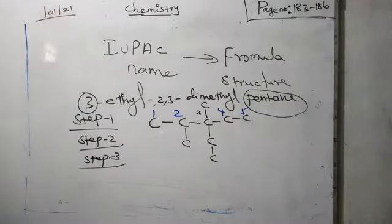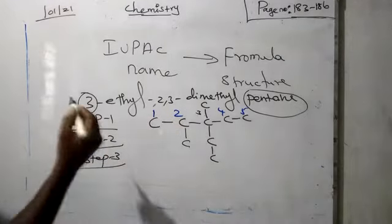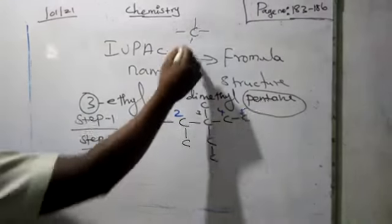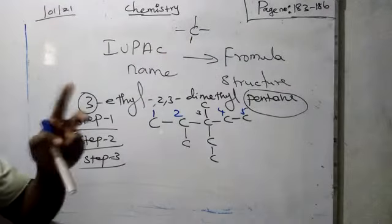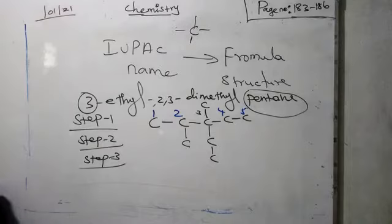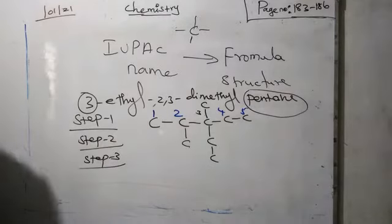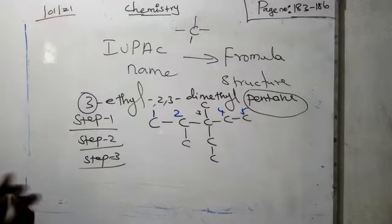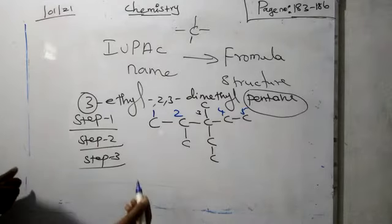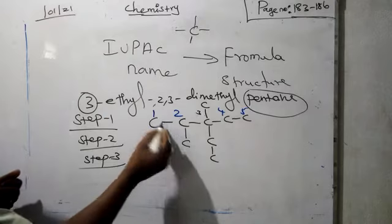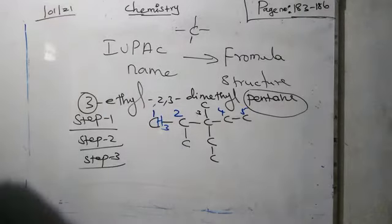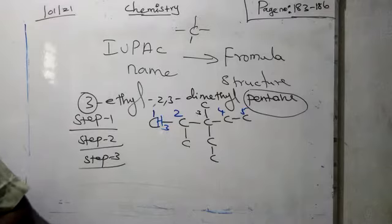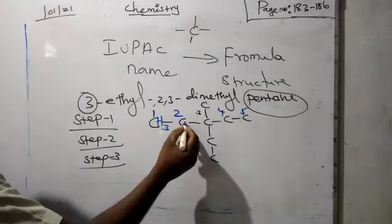Step 3: we fill in the number of hydrogen atoms according to the valency of carbon. We have to remember that the valency of carbon is 4. Carbon can form 4 bonds with different atoms or other carbons. We check how much valency is already satisfied, and the remaining valency is filled with hydrogen. The first carbon has one bond satisfied, so the remaining 3 valencies are filled with hydrogen.